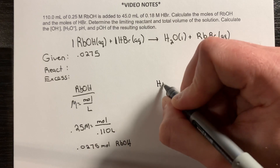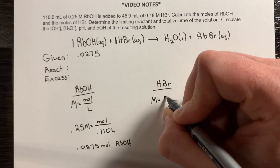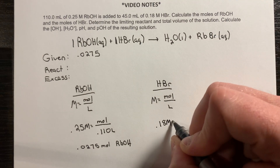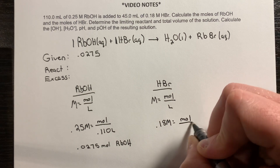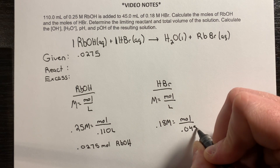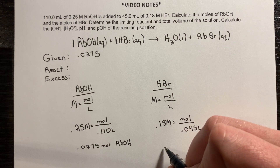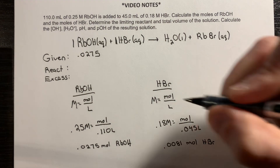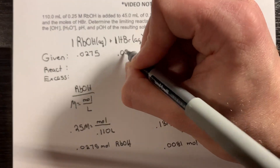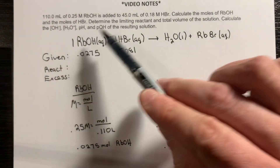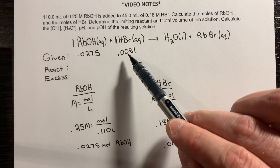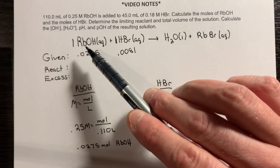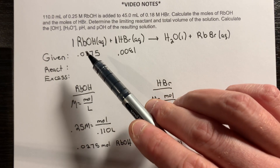I'll do the same for hydrobromic acid, HBr: molarity equals moles over liters. The molarity is 0.18 and the volume is 0.045 liters. The number of moles I solve for is 0.0081 mol HBr. What we find is that it's a one-to-one relationship, and I actually have less acid than base. As a result, my acid is going to run out — it will all be neutralized by the base, leaving an excess of base.